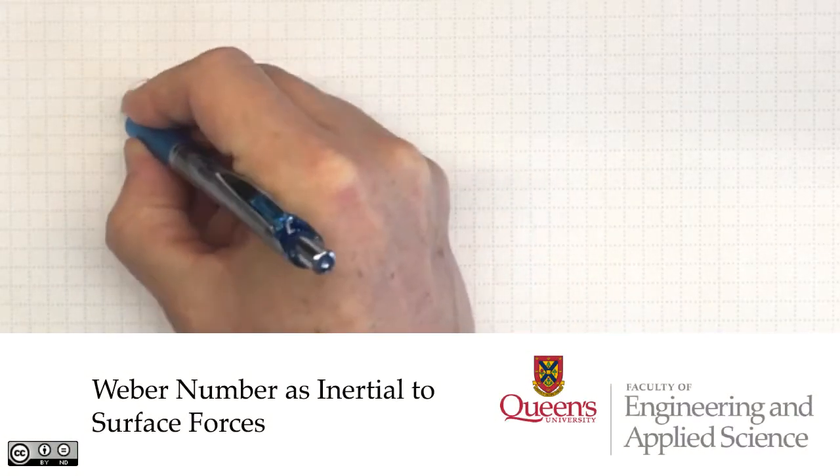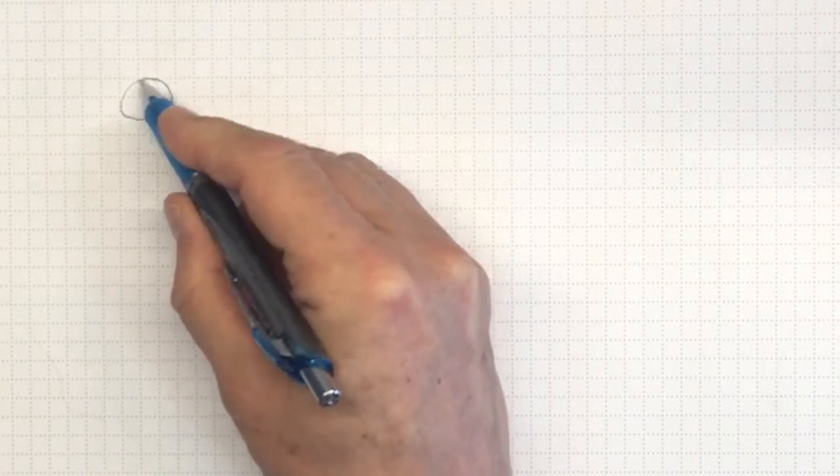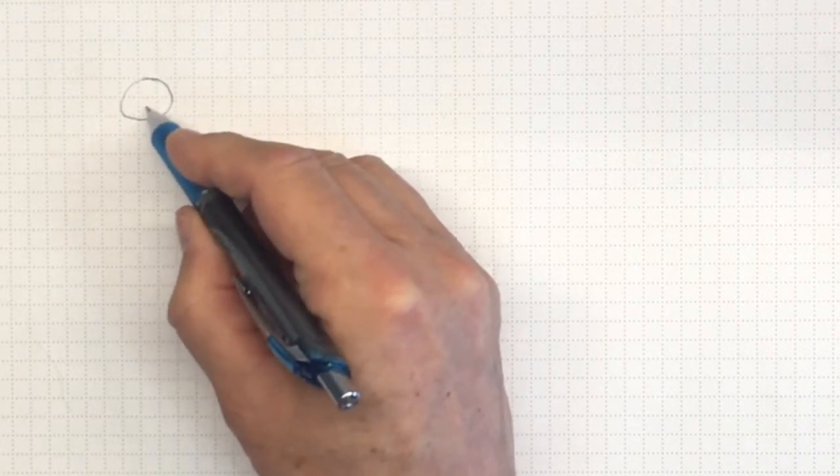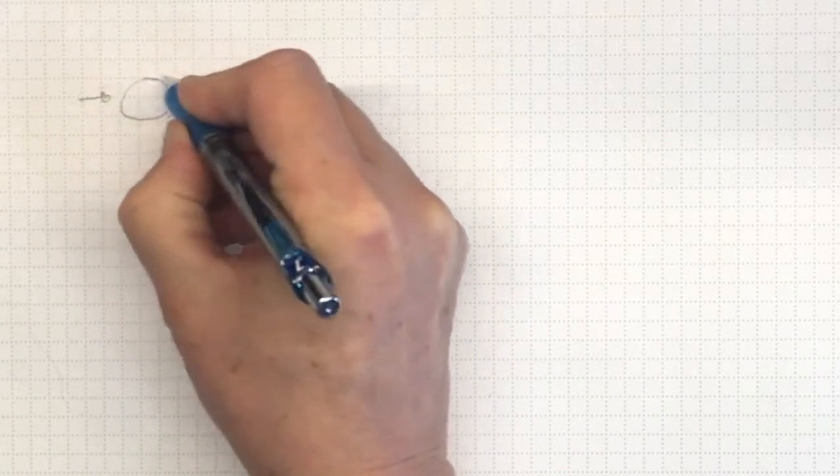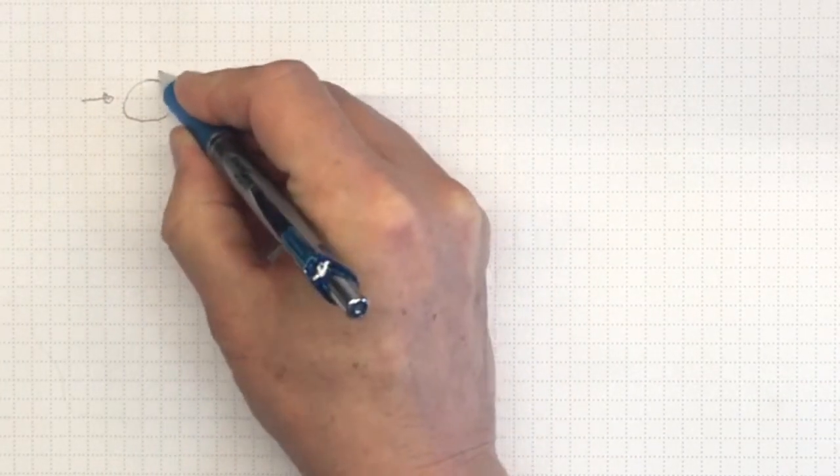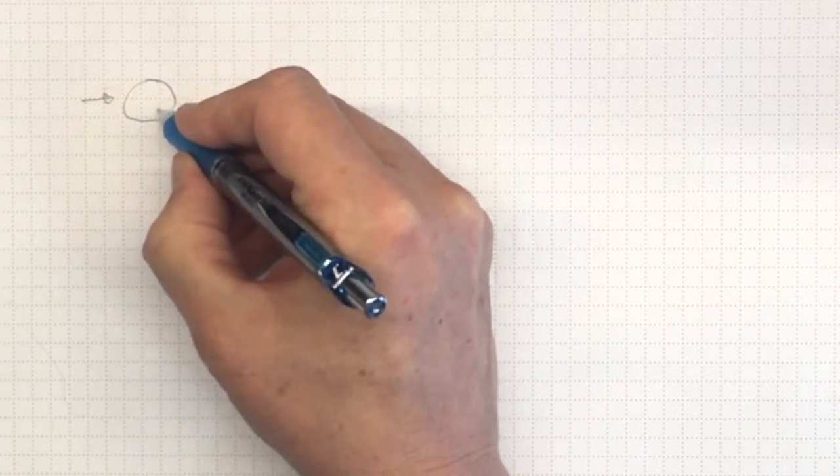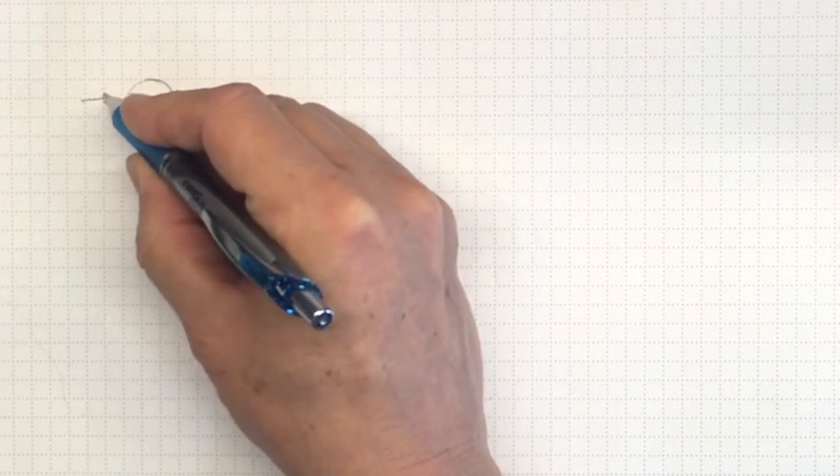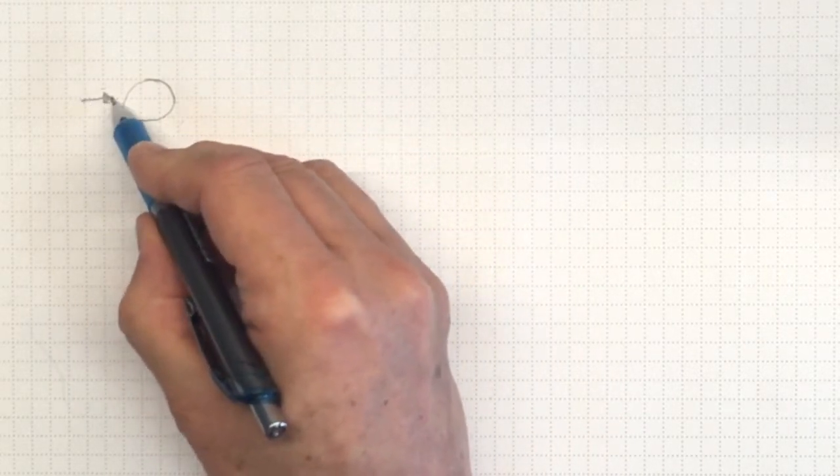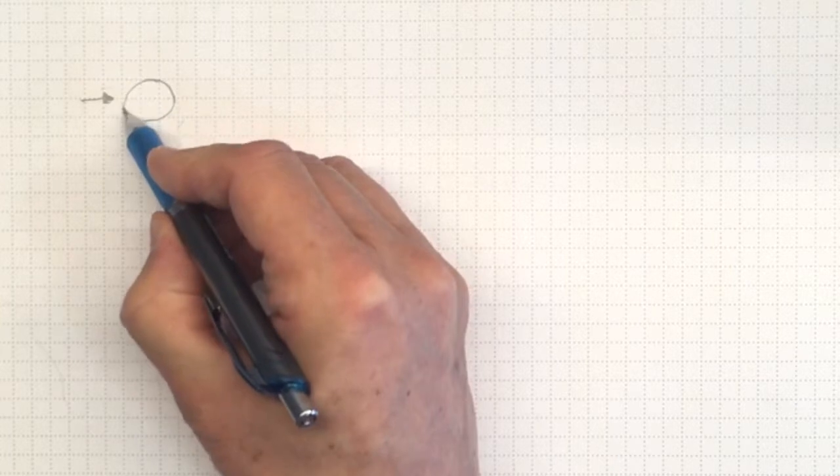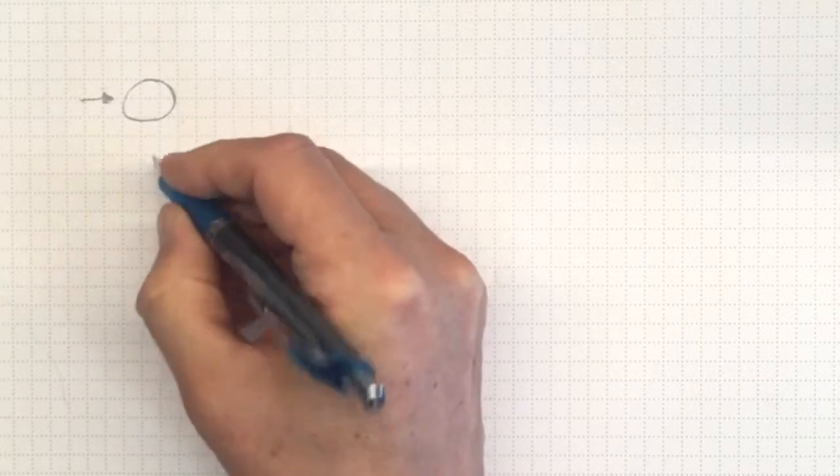If we're interested in small drops or bubbles, they'll tend to be spherical as long as surface tension is pulling them into that round shape. But if there's a velocity of fluid coming and flowing over them, they'll tend to deform and may break up into smaller bubbles or drops. And what determines that break up is the ratio between these inertial forces due to this velocity and the surface tension forces that are tending to pull that bubble or drop back into a spherical shape.